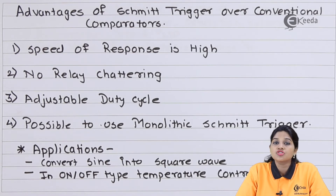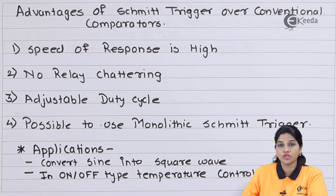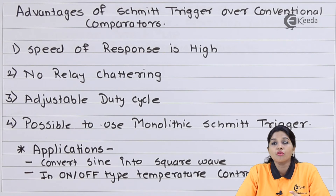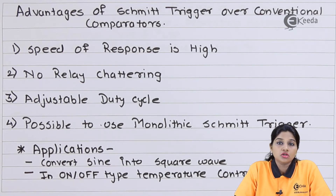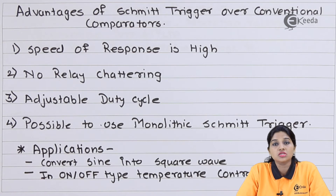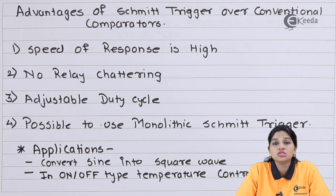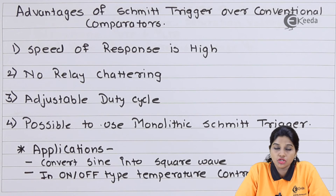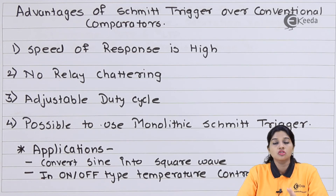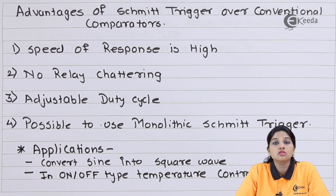The second application of Schmidt trigger is an on-off type temperature controller. In this application, the heater is turned on or off when the voltage value increases or decreases beyond a certain level, requiring only two output states — on and off. This waveform can be easily obtained using a Schmidt trigger circuit. Additionally, Schmidt trigger circuits are used in over-voltage or over-current protection circuits. These are some of the applications where Schmidt trigger can be implemented as a square wave generator circuit.